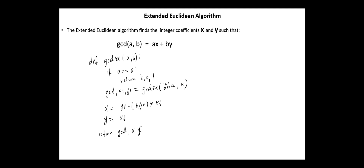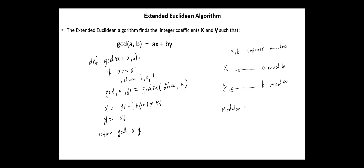I think it will be easy for you to write the complete program and to test the code for different values. The Extended Euclidean Algorithm is very useful when A and B are co-prime numbers, since x is the modular multiplicative inverse of A mod B, and y is the modular multiplicative inverse of B mod A. The computation of the modular multiplicative inverse is a basic step in generating keys in the RSA public key encryption method. For today, that's all. Thank you.